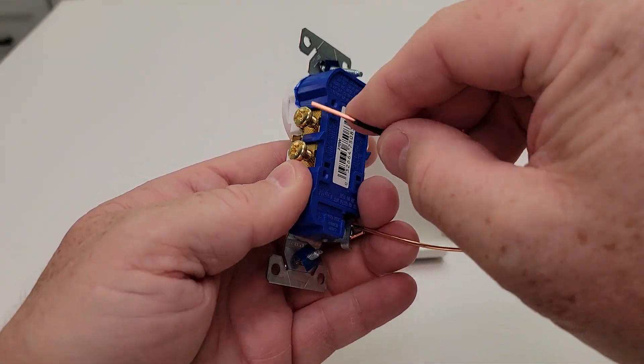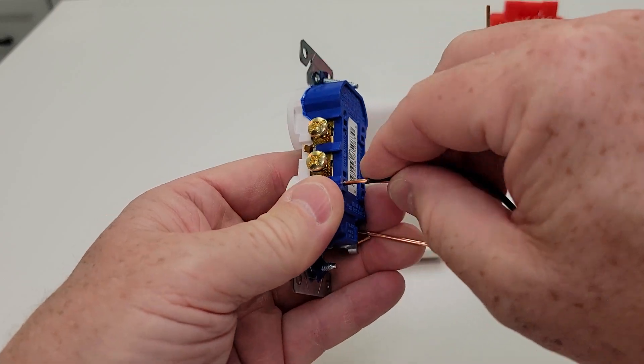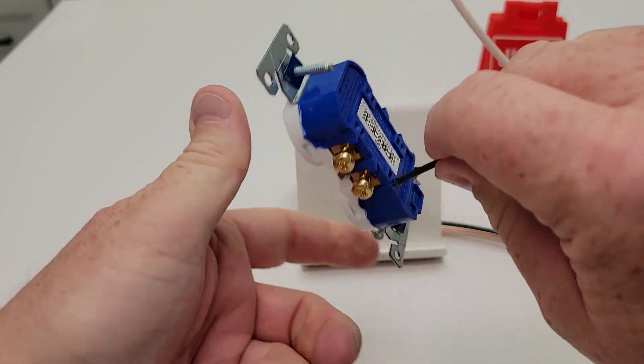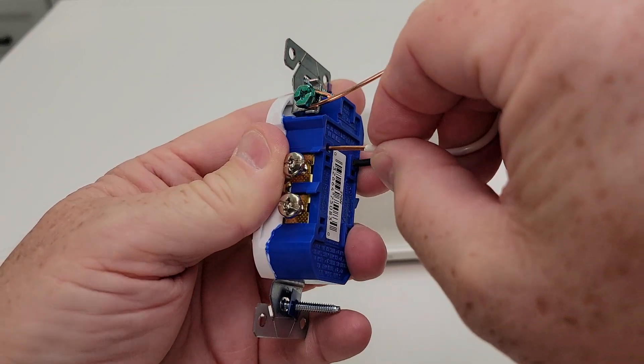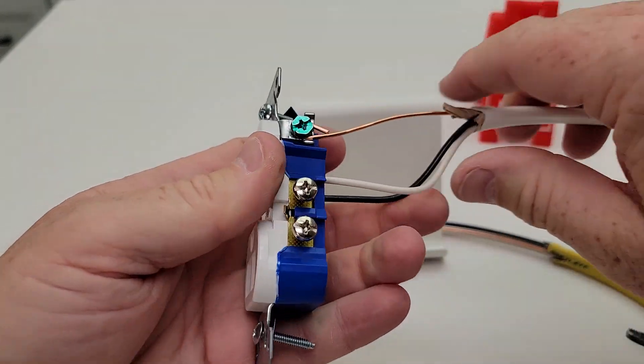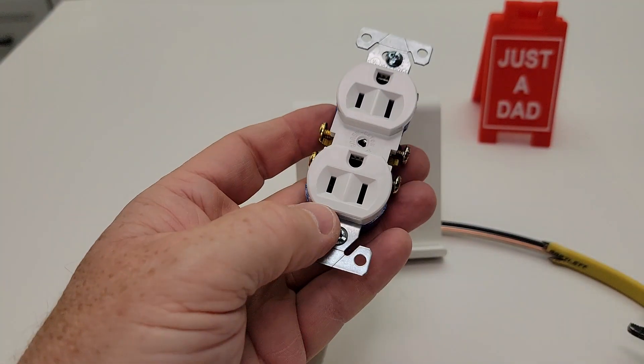Let's do the black one again. Push it in until it stops and it's snug. Then you're going to push the white one in, push it in. Now it's nice and snug and your receptacle is hooked up, ready to go.